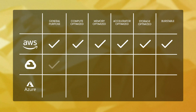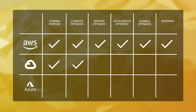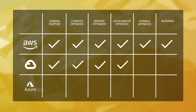GCP Compute Engine also supports general purpose VMs along with compute optimized that offer high performance per CPU core. There's a memory optimized option and accelerated VMs. And just like AWS, there's a shared core or burstable VM option available. At the time of recording, GCP does not offer a storage optimized option.